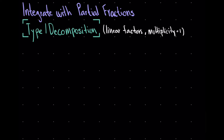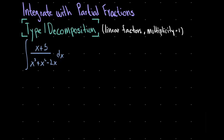We're going to start with the simplest, Type 1, and I'll explain in a bit what linear factors with multiplicity equal to 1 means. Let's get started with an example. We're asked to find the integral of (x + 5) all over (x³ + x² - 2x) dx. Before we get into it, we can only use partial fraction decomposition when the numerator has a degree strictly less than that of the denominator.